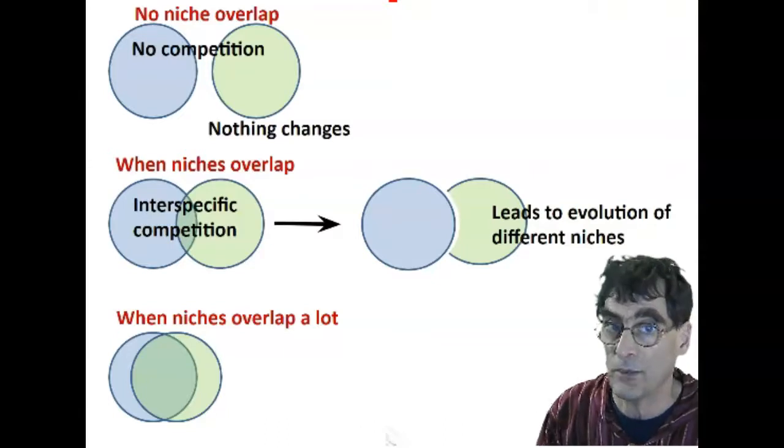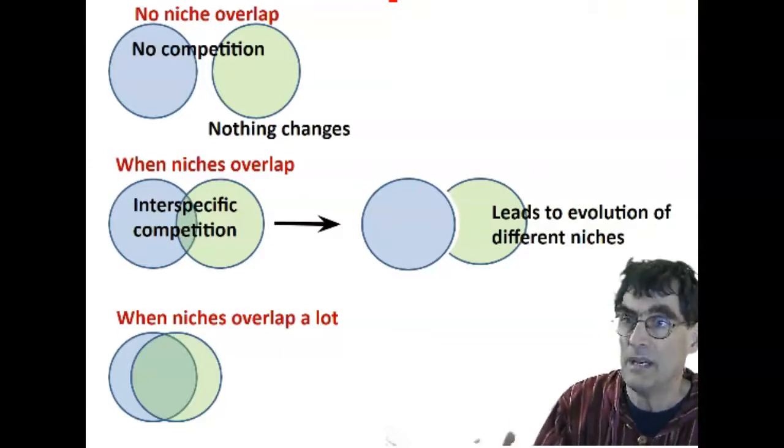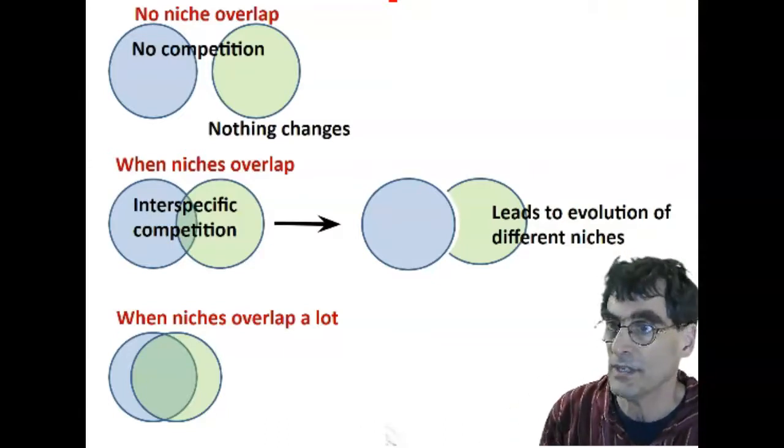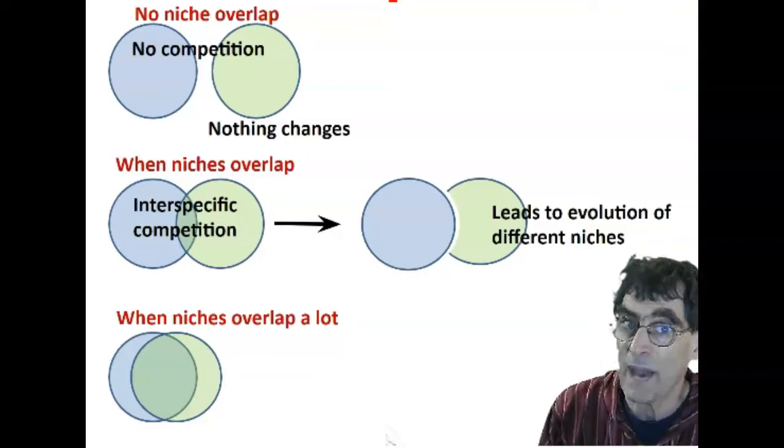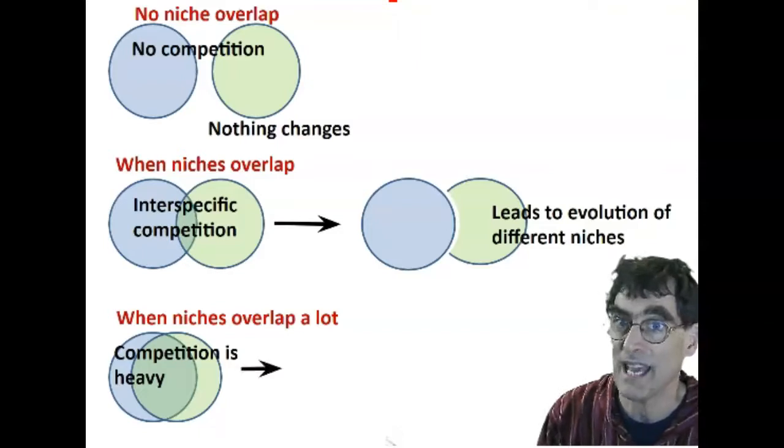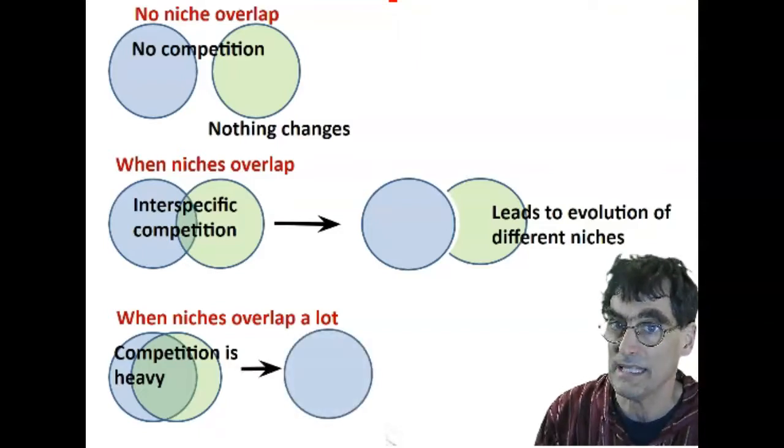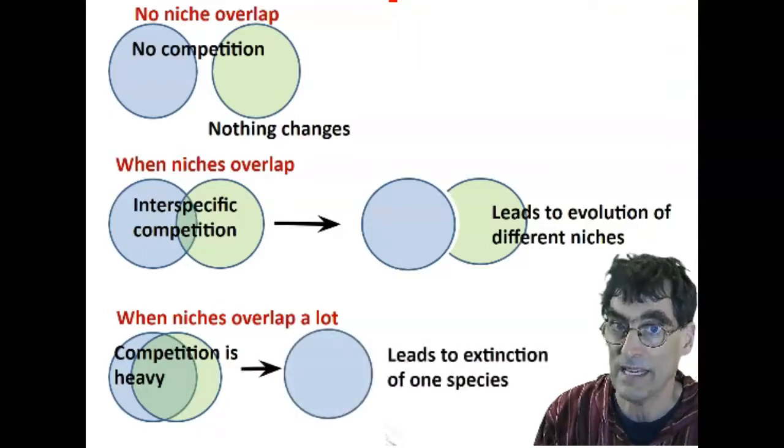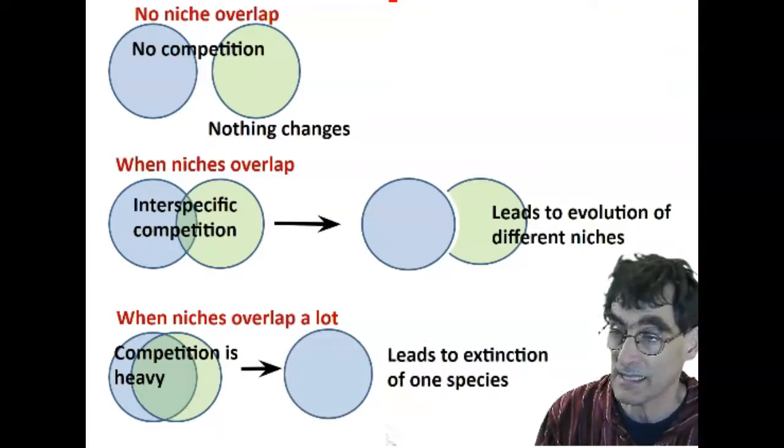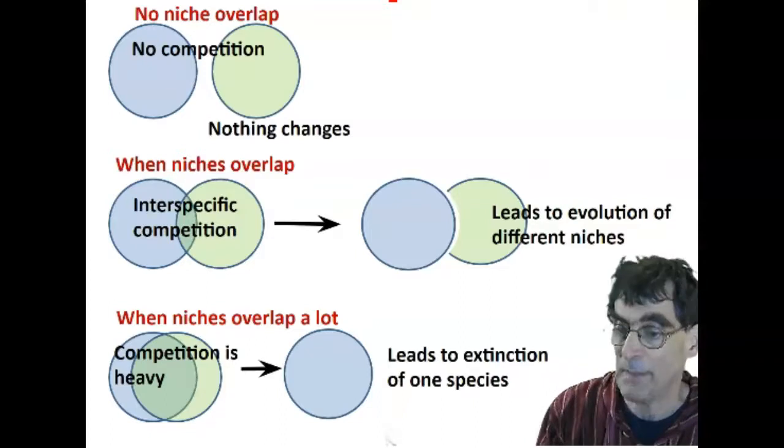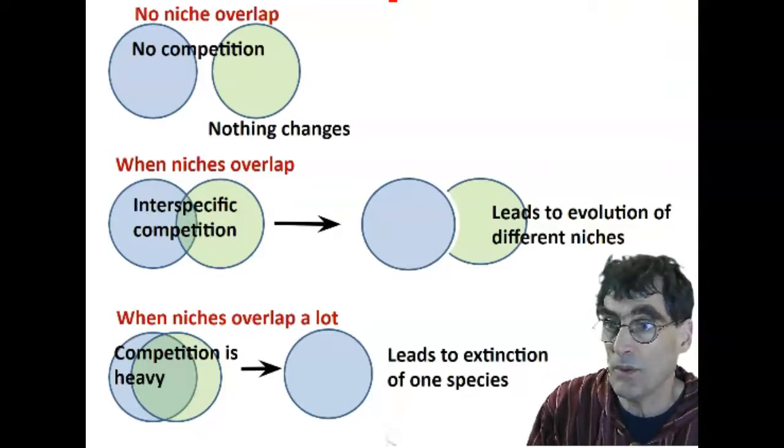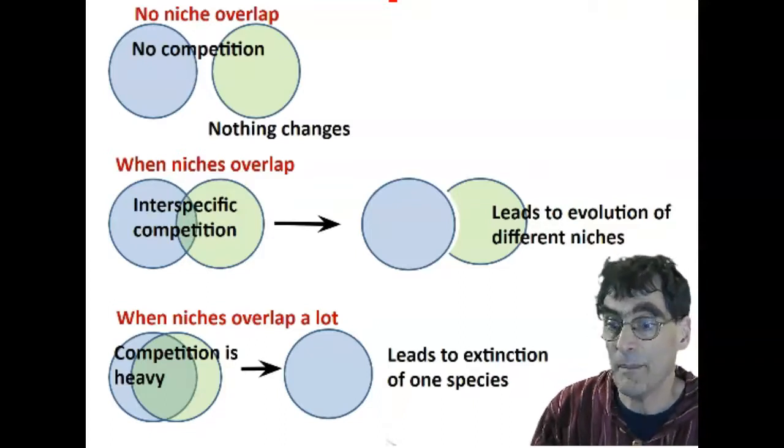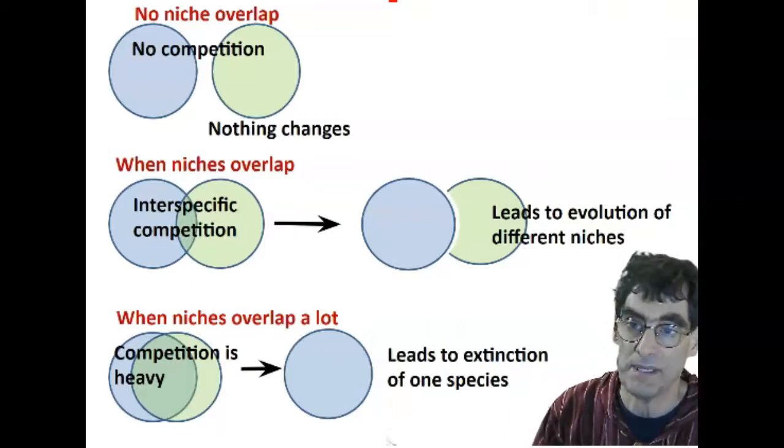So we're competing against the same niche area there. So what's going to happen in this case? Generally speaking, when competition is heavy, one species wins out entirely, and the other species becomes extinct or has to move away. You're going to see this happen a lot. This is one of the biggest problems with invasive species. They come in and they outcompete and the native species disappear.